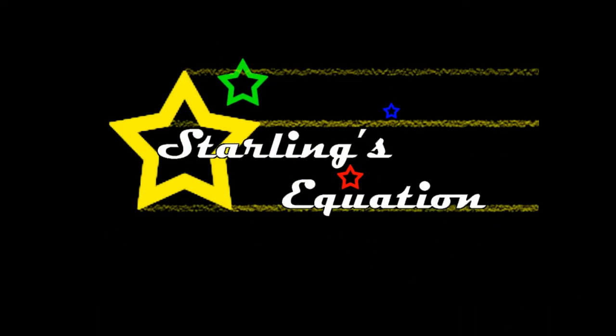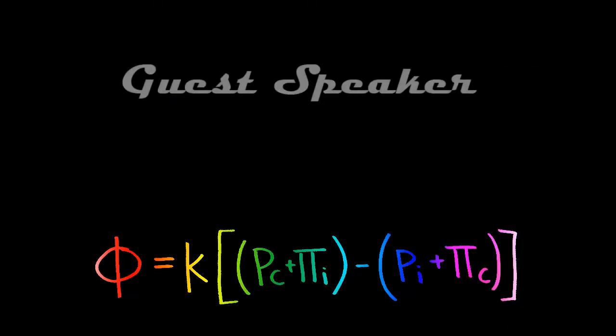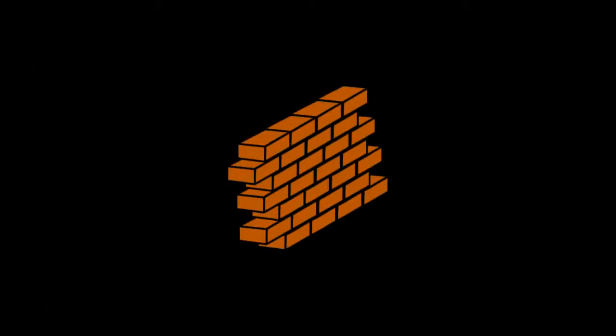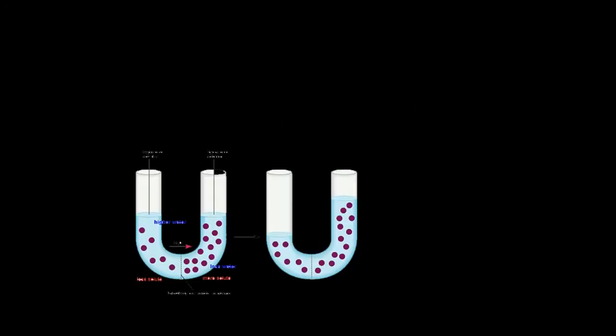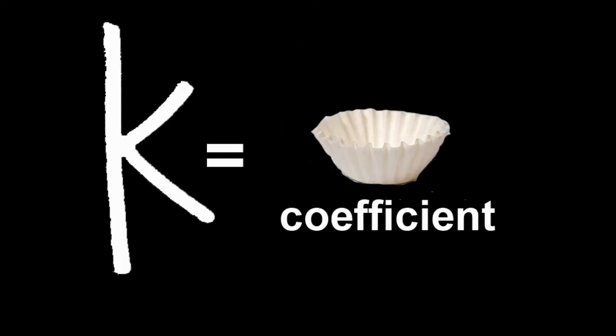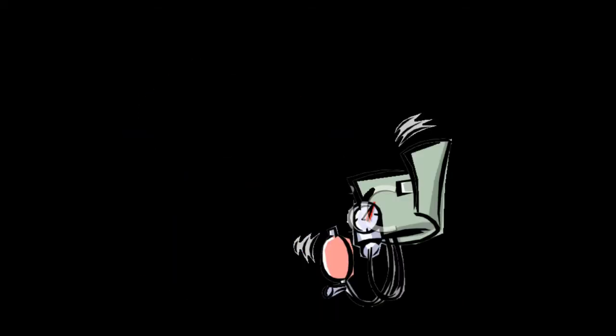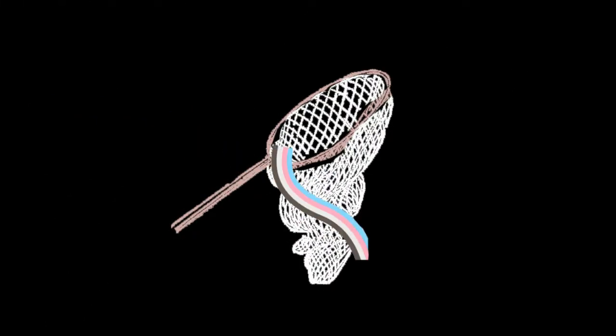Introducing Starling's Equation. Starling's Equation describes the net flow of fluid across the capillary walls driven by hydrostatic pressure and osmotic forces. K is the filtration coefficient, describing the ease of crossing the membrane. Pc is the hydrostatic pressure in the capillaries, and Pi is the hydrostatic pressure in the interstitial tissue. Pi is the osmotic pressure in the capillaries, and Pi is the osmotic pressure in the interstitial tissue.